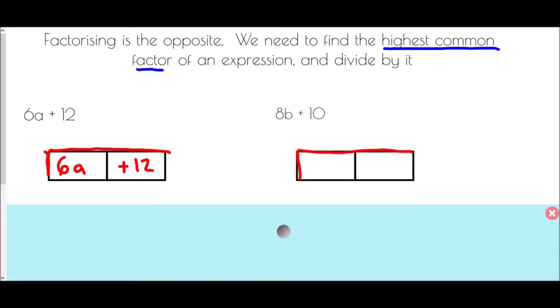The highest common factor of 6 and 12 is 6, so we divide by 6. 6a divided by 6 gives a, and 12 divided by 6 gives positive 2. The factorized expression is 6(a + 2).